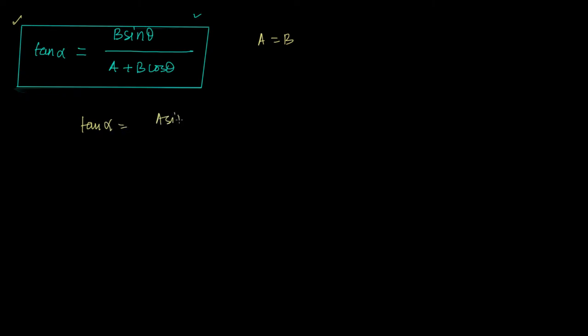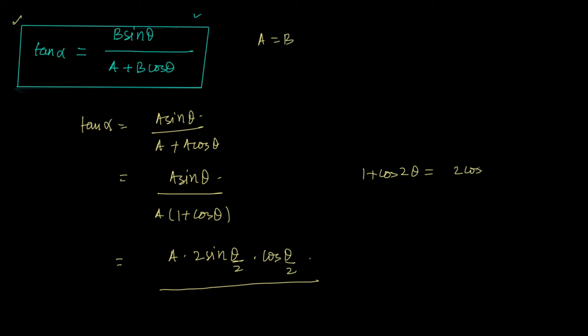Tan alpha is equal to A sine theta upon A plus A cos theta. This is equal to A sine theta upon A into 1 plus cos theta. And that is A into 2 sine theta upon 2 into cos theta upon 2, because 1 plus cos theta will become 2 cos square theta upon 2.